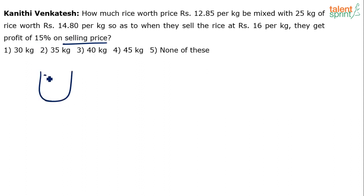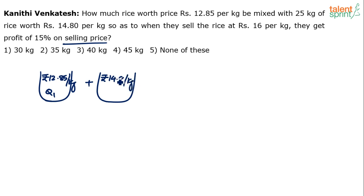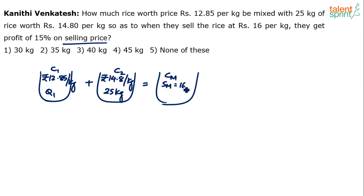There are two varieties of rice. The first variety costs rupees 12.85 per kg — the quantity q1 is to be calculated. It should be mixed with another variety costing 14.8 per kg, and the quantity here is 25 kg. These are cost prices. The cost price of the mixture is not known, but the selling price of the mixture is 16 rupees per kg, and the profit on the mixture is 15 percent of the selling price.